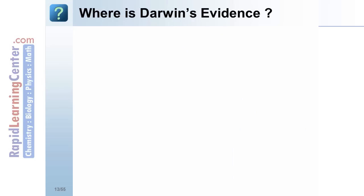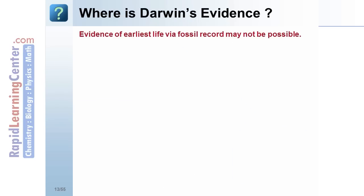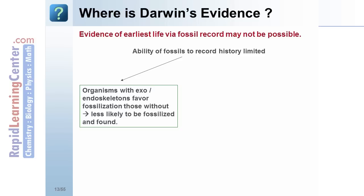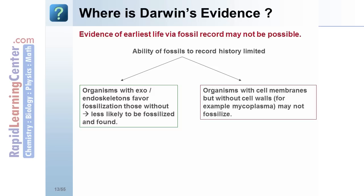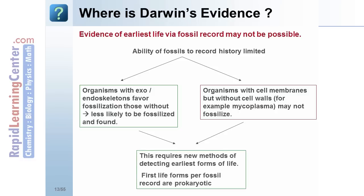Where is Darwin's evidence? Evidence of earliest life via the fossil record may not be possible. The ability of fossils to record history is limited — organisms with an exo- or endoskeleton are favored for fossilization over those without. Organisms with cell membranes but without cell walls, for example mycoplasma, may not fossilize at all. This requires new methods of detecting earliest forms of life. First life forms per the fossil record are prokaryotic.